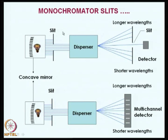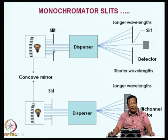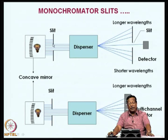Let us now take a look at another component of an instrument and its interaction with electromagnetic radiation. We are talking about slits, and there is no mechanical interaction except that the slits allow the radiation from one end to the other end. It will allow the radiation to pass through with a fixed aperture. Usually, in all spectrophotometers, you need two slits — one is the entrance slit and another is the exit slit.